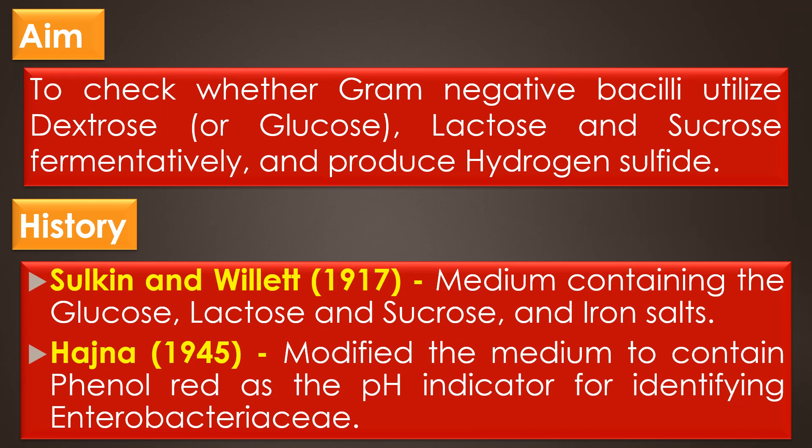Aim. The aim of the triple sugar ion test is to check whether gram-negative bacilli, particularly the Enterobacteriaceae family, can utilize dextrose or glucose, lactose, and sucrose fermentatively and produce hydrogen sulfide.